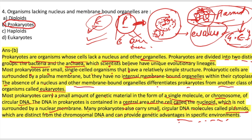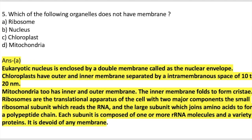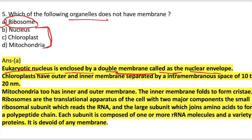Question number 5: Which of the following organelles does not have a membrane? The options are: ribosome, nucleus, chloroplast, or mitochondria. Nucleus, chloroplast, and mitochondria all have membranes. The answer is ribosome. The eukaryotic nucleus is enclosed by a double membrane called the nuclear envelope. Chloroplast has outer and inner membranes separated by an intermembranous space of 10 to 20 nanometers.